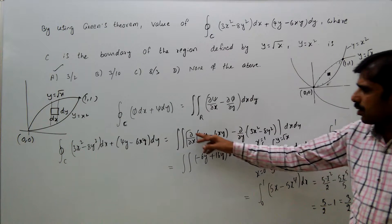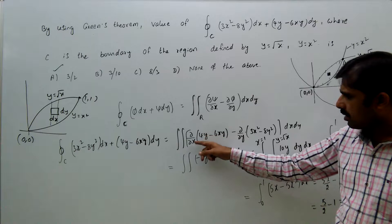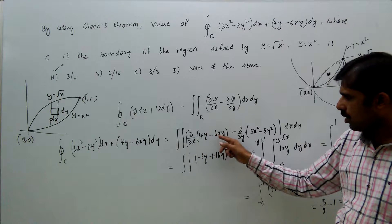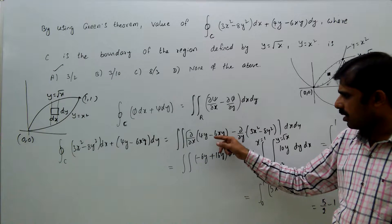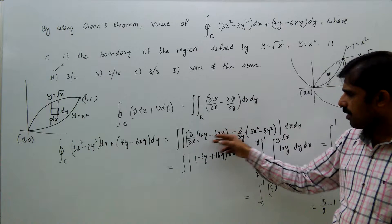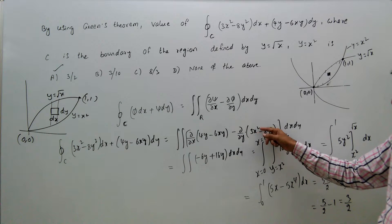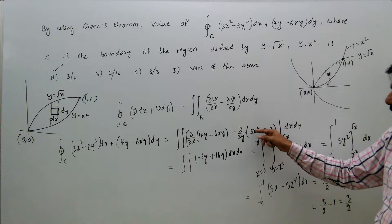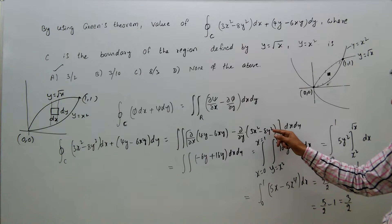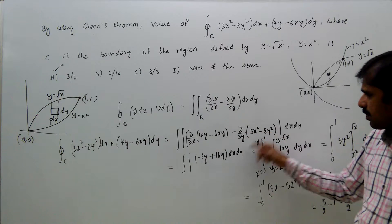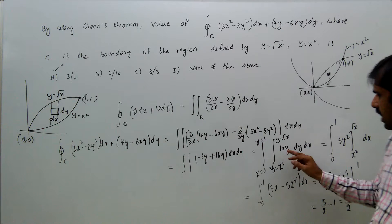Now, ∂/∂x of (4y - 6xy): the derivative of 4y with respect to x is 0, and the derivative of -6xy with respect to x is -6y. Then ∂/∂y of (3x² - 8y²): derivative of 3x² with respect to y is 0, and derivative of -8y² is -16y. With the double negative, this becomes +16y. So -6y + 16y = 10y.